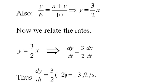It's given in the problem as negative 2 feet per second. So dy/dt is 3 halves times negative 2 feet per second. So dy/dt is the shadow is shrinking at 3 feet per second.